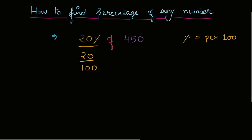And in mathematics, 'of' ka matlab hota hai multiply. So 'of' is replaced by multiply sign. Toh multiply sign laga diya, and 450 ko hamein as it is likhna hai.